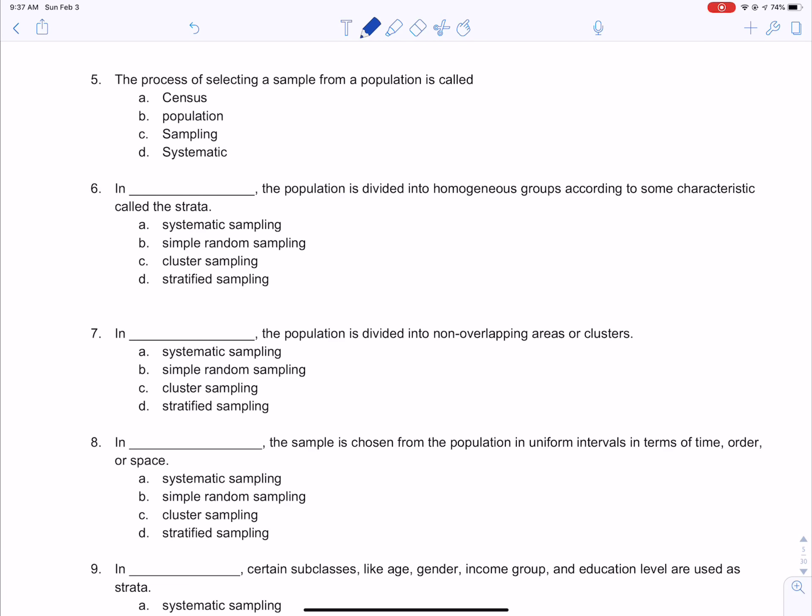Number five says the process of selecting a sample from a population is called sampling. A census is if you gather everyone in the population. Population is not at all about selecting something. And then systematic is a method we use, but sampling is what we say we're doing when we are selecting a sample.